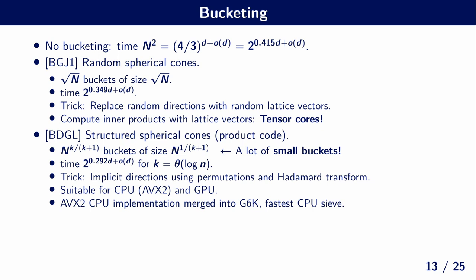And I also want to mention that this BGJ1 sieve was the one that was used by the General Sieve Kernel to set the old records at dimension 155.